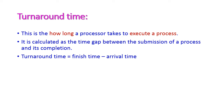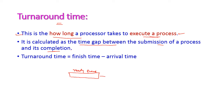The next important criteria is turnaround time. Turnaround time means how long it takes to execute a process — that is, the time gap between the submission of a process and its completion. The process is submitted to the ready queue, and the turnaround time is calculated as finish time minus arrival time, where finish time is when the process completes on the CPU and arrival time is when the process enters the ready queue.